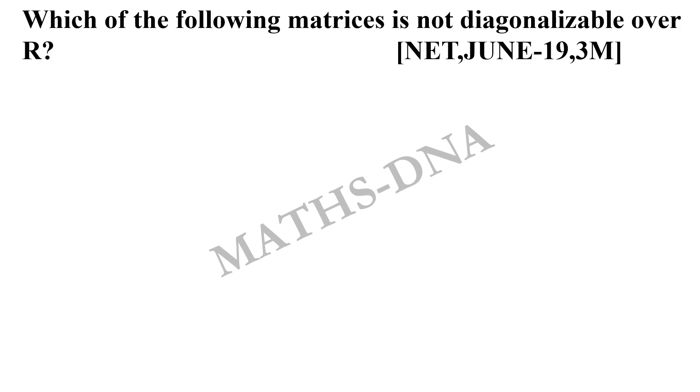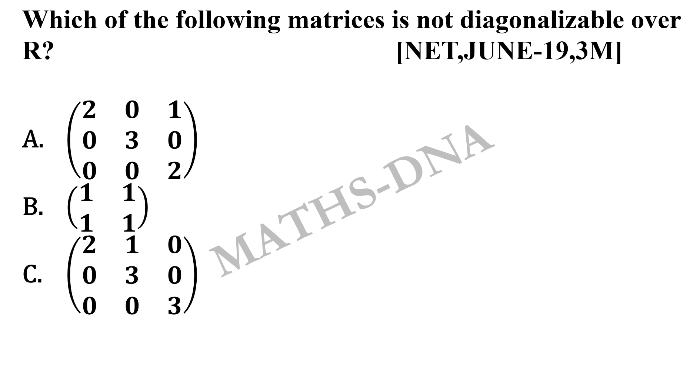Moving on to the question, which of the following matrices is not diagonalizable over R? The options are A, a 3 by 3 matrix with diagonal entries as 2, 3, 2 and upper diagonal entries will be 1. Option B, a 2 by 2 matrix with entries 1, 1, 1, 1. Option C, a 3 by 3 matrix with diagonal entries as 2, 3, 3 and above that 1.